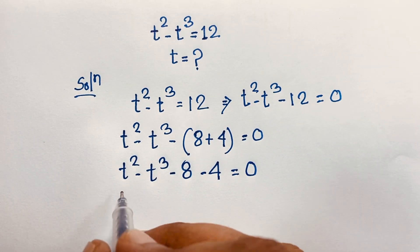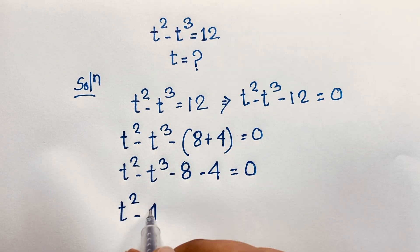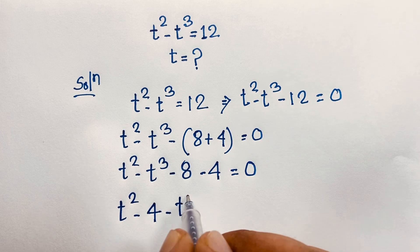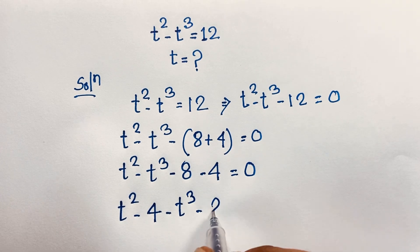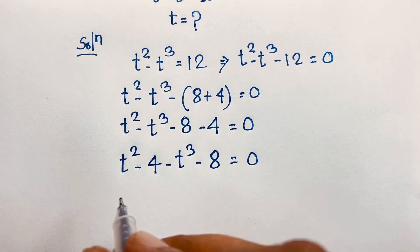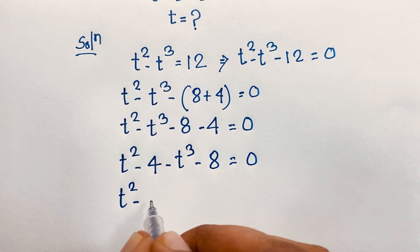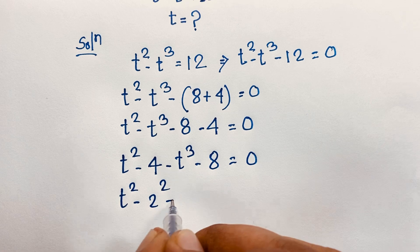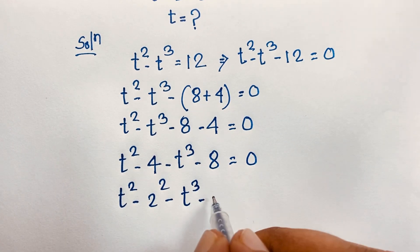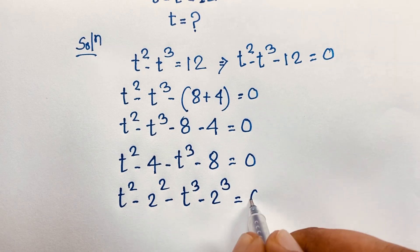Now, I take t to the power 2 and this 4 here, and this t to the power 3 I take here and this negative 8 is equal to 0. So we know that 4 is 2 to the power 2, and 8 is 2 to the power 3. So: t to the power 2 minus 2 to the power 2, minus t to the power 3 minus 2 to the power 3 is equal to 0.